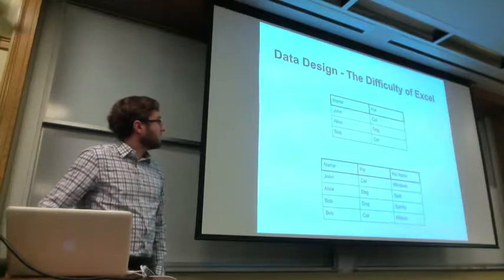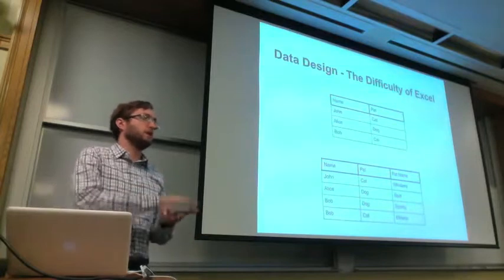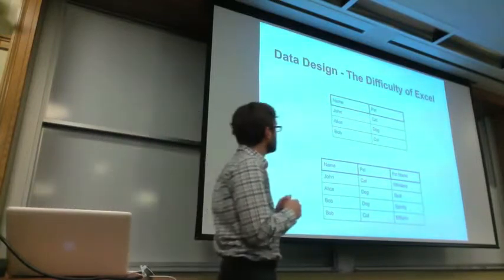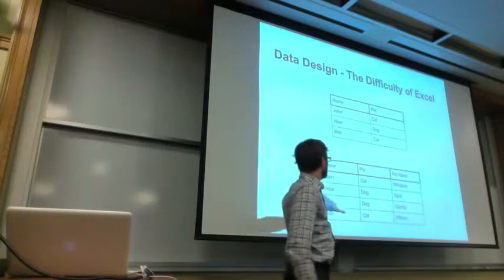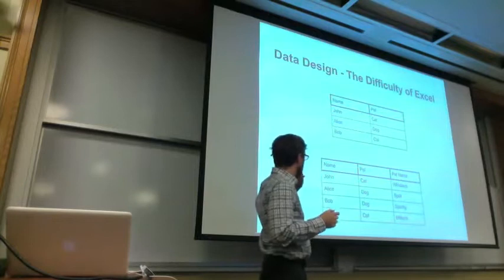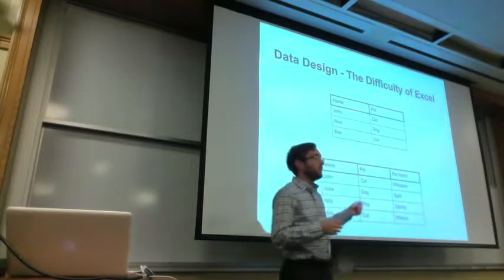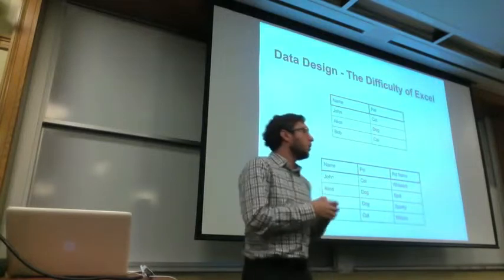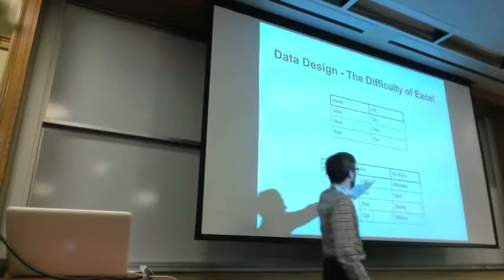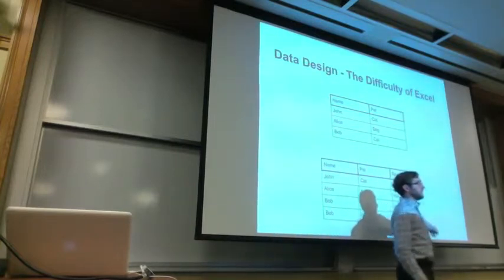So these are the problems with flat tables: data often tends to stack, you have one-to-many relationships, instances where people have multiple pets. Another issue I meant to mention is if we have additional information, like the pet owner's address, we have to change it in all instances. If we imagine there's an address column and Bob moves, you have to make sure that every...